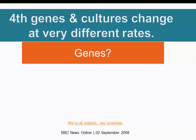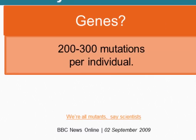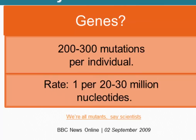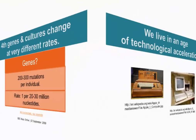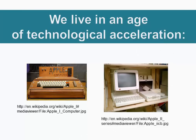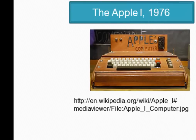The fourth and final difference is that genes and cultures change at very different rates. When you give birth to a child there are probably two to three hundred new mutations in that child that weren't present in you or your partner. But given that we have three billion nucleotides in our DNA, the mutation rate is one mutation for every 20 to 30 million nucleotides — that's remarkably high fidelity. Cultural transmission isn't nearly as accurate, and culture can change with tremendous speed.